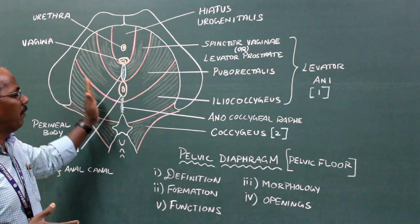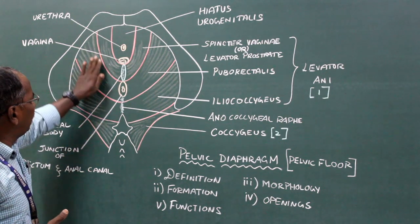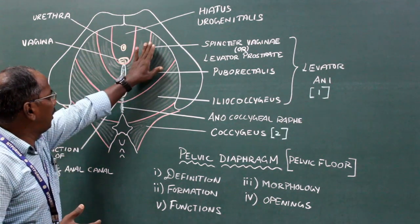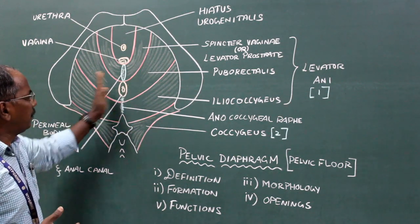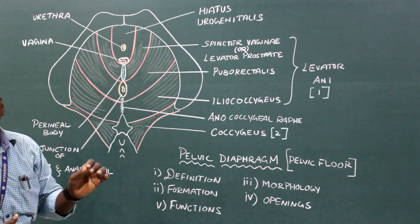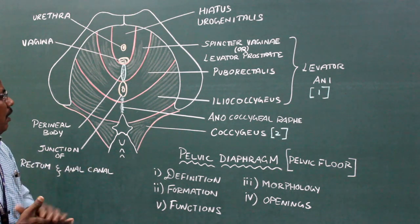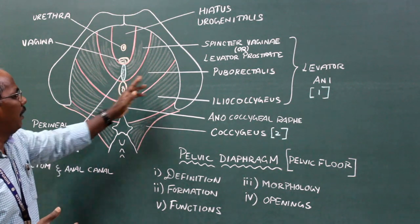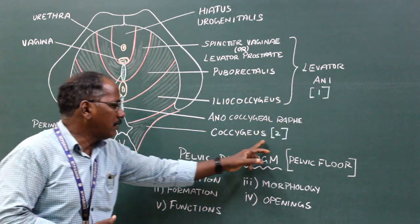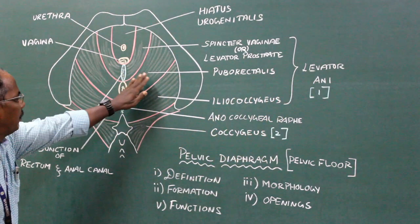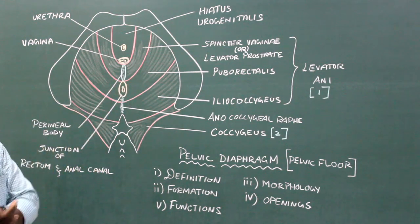Formation of pelvic diaphragm: it is formed by levator ani and coccygeus muscles of both sides and their covering fascia.